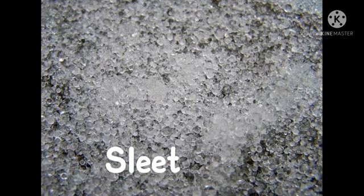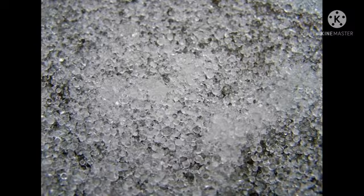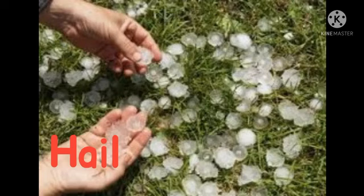Sleet are small ice particles that form from the freezing of liquid water drops, such as rain drops, or from the freezing of melted snowflakes.